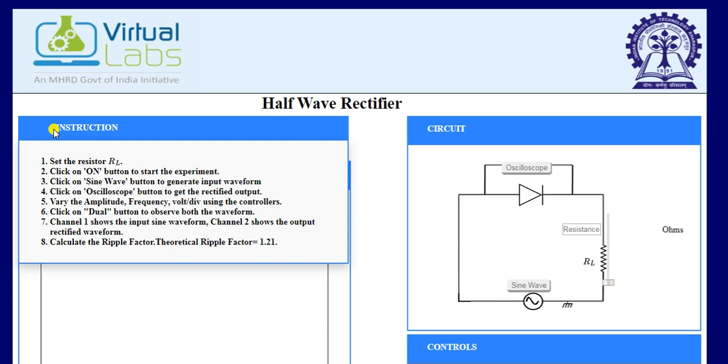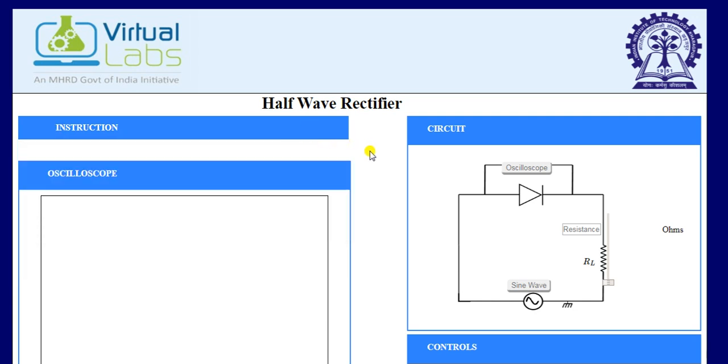And vary the value of amplitude, frequency, volt per division using the controllers. Click on dwell button to observe both the waveforms—input waveform and output waveform. So our first task is to set the value of load resistance.